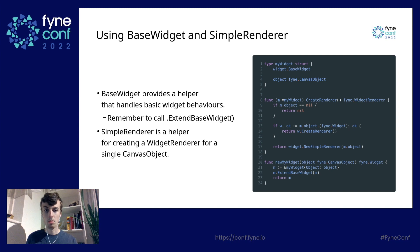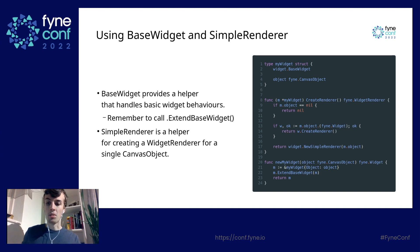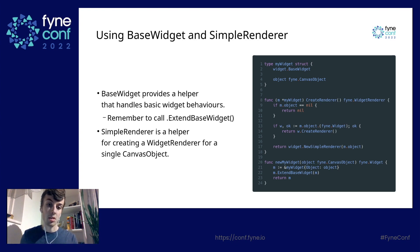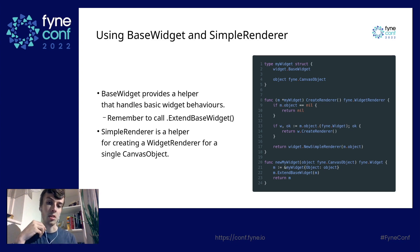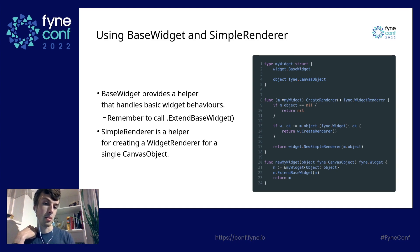We then need to create a renderer, but we can use widget.SimpleRenderer if we want to very easily create a single widget renderer from a single canvas object, when we don't need more functionality from the renderer. The example here just wraps a canvas object inside the widget, and if the canvas object is itself a widget, we use the CreateRenderer from that widget instead.